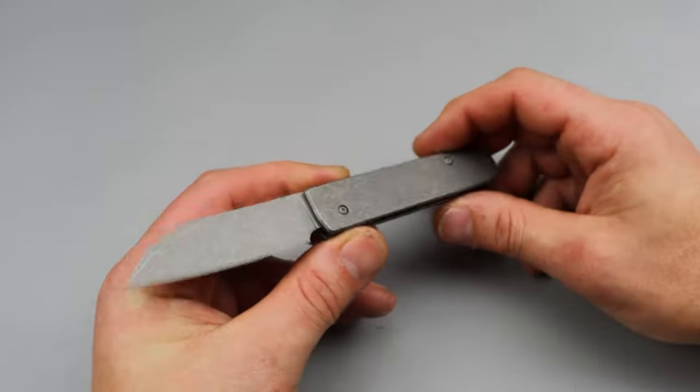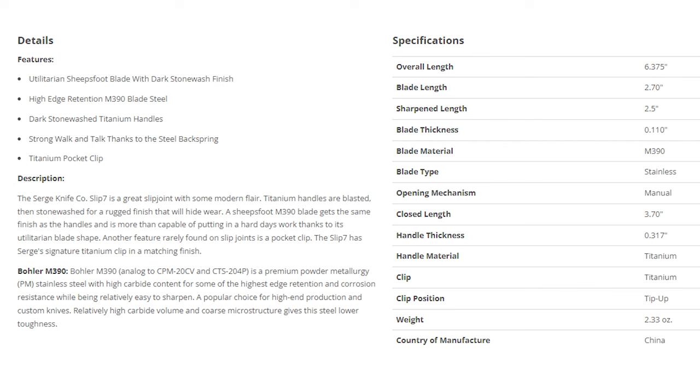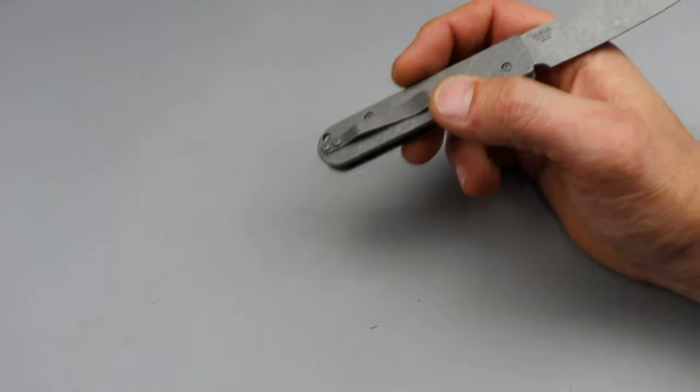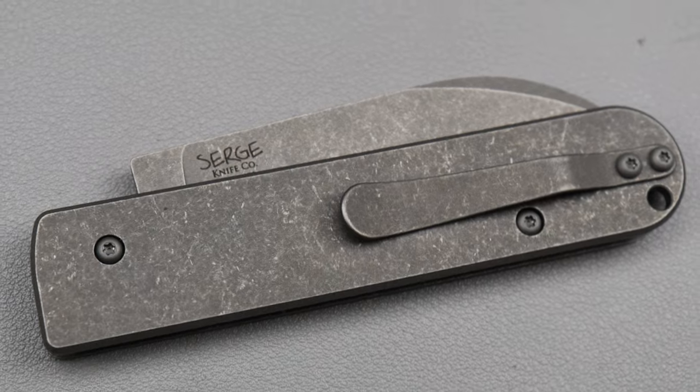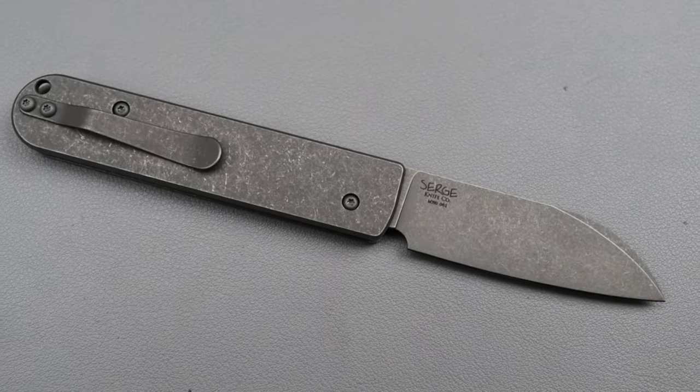Let's get to the next one. The next one is the Slip Seven, Serge Panchenko Slip Seven. It is a slip joint in premium materials. We have M390, full titanium, and this is like ten dollars less than this one. But it is a slip joint, so the slip joint has really good walk and talk, so check this walk and talk out.